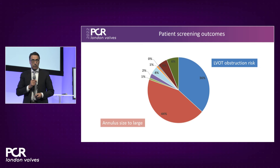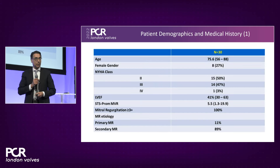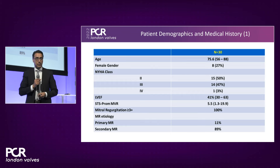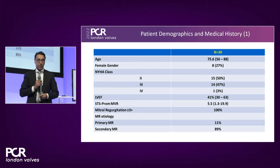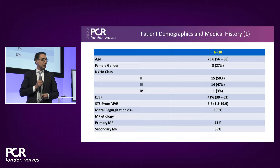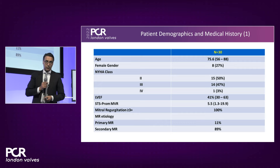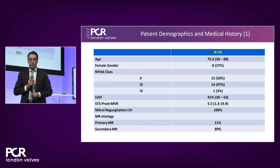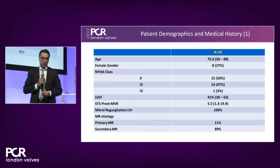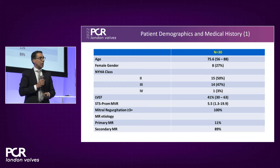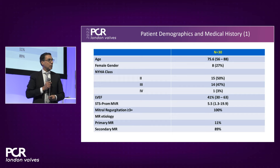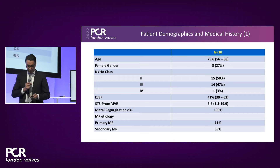The first 30 patients had a mean age of 75 years, mostly NYHA functional class II and III, mean LV ejection fraction around 40%, and STS score for mitral valve replacement of 5.5. Very importantly, almost 90% of patients suffered from secondary MR — this is a typical high-risk population.